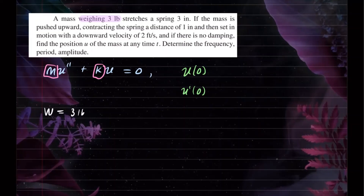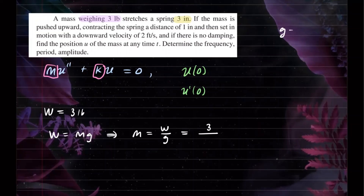Weight equals mass times the gravitational constant, so M = W/G. Since the problem gives inches we'll convert to feet and use G = 32 ft/s². So M = 3/32. For K, the spring constant: the mass stretches the spring 3 inches, so the stretch L = 3 inches = 1/4 foot. Using K = W/L, we get K = 3 ÷ (1/4) = 12. So K equals 12.